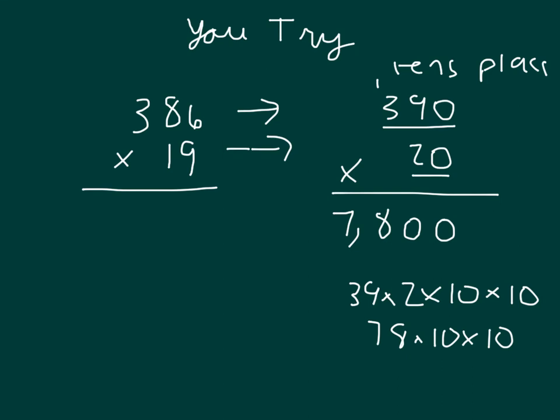For our exact answer for this problem, 9 times 6 is 54, for a regroup of 5, 9 times 8 is 72, plus 5 is 77. 9 times 3 is 27, plus 7 is 34. Did you get that first number right?